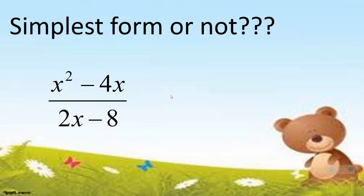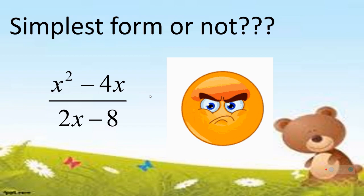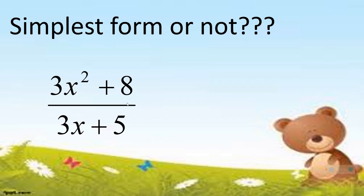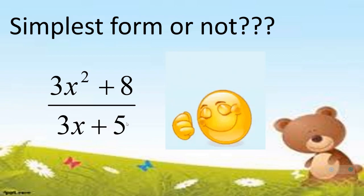Then we have x squared minus 4x all over 2x minus 8. This is not written in simplest form. Next, we have 3x squared plus 8 all over 3x plus 5. This is already written in simplest form.